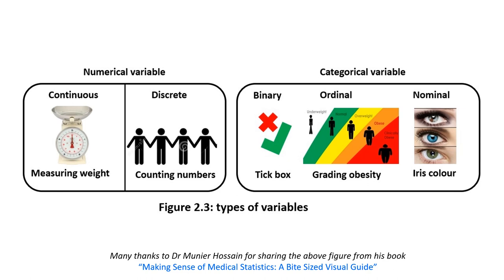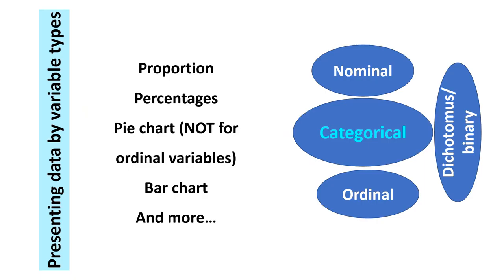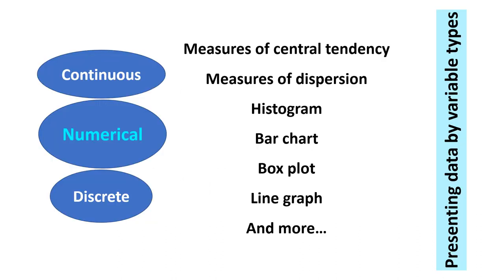There is another very useful representation of different types of variables in picture form. You can see the different types of categorical variables: binary, ordinal, and nominal. Eye color is nominal; discrete variables involve counting numbers. Measuring weight is a continuous variable. If it is a categorical variable, you can present it as a proportion or percentage, or in a pie chart — but not for ordinal variables. You can use a bar chart. If it is a numerical variable, you can present it as a measure of central tendency or dispersion, especially for continuous variables — histogram, bar chart, box plot, line graph, and more.